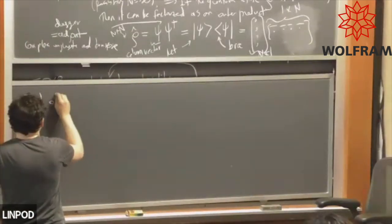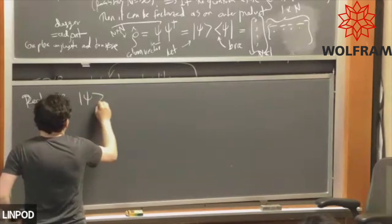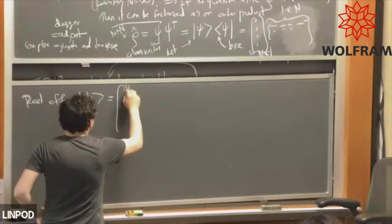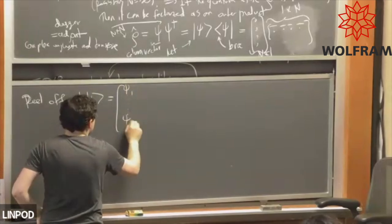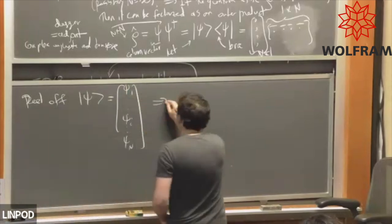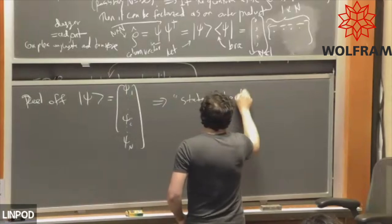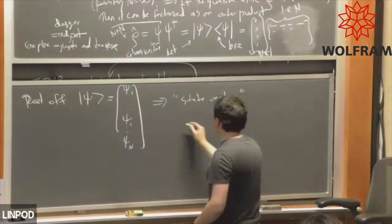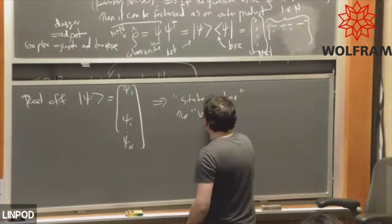We can peel off ψ and peel off ψ, which is just this column vector. I'll just write it out as ψ₁, dot dot dot, ψᵢ, dot dot, ψₙ. It's a column vector, and this thing is known as the state vector or, through a slight abuse of terminology, the wave function.